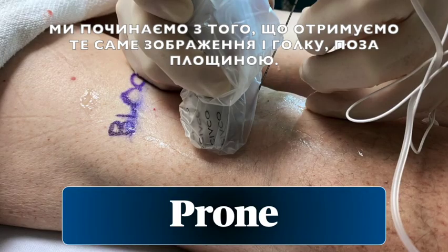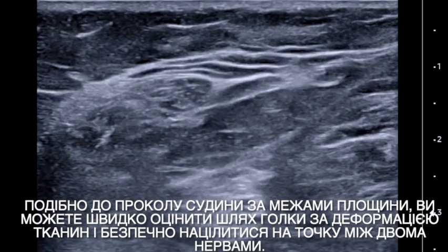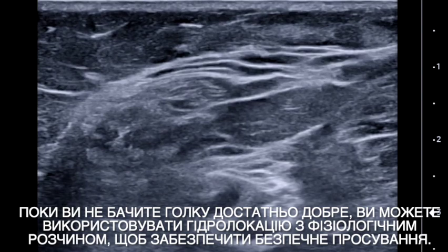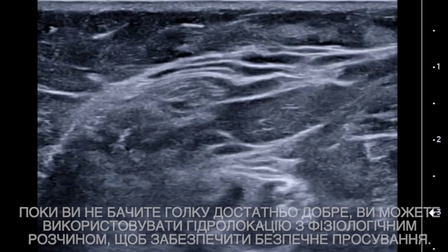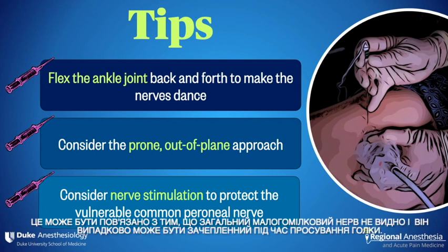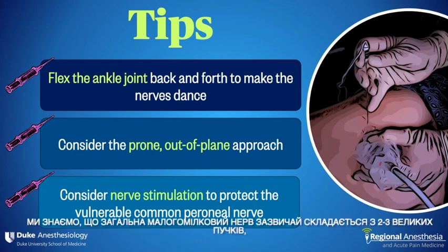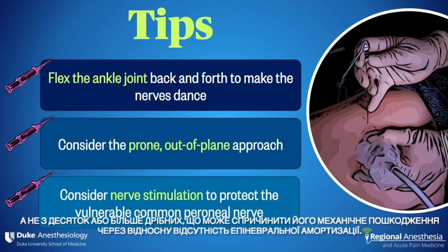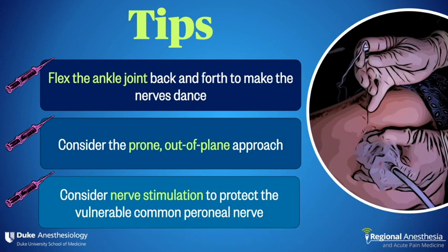We start by getting that same image and then a needle is brought out-of-plane. Just like an out-of-plane vascular puncture, you can quickly estimate the needle path by tissue deformation and safely aim for the point between the two nerves. While you won't see your needle all that well, you can use hydrolocation with saline to help stay safe as you advance. Lastly, the lateral popliteal sciatic block is one of the higher-risk peripheral blocks from the perspective of nerve injury — this may be because the common peroneal nerve is not seen and accidentally contacted as the needle is advanced. The common peroneal nerve typically comprises only two to three large fascicles rather than a dozen or more smaller ones, which may predispose it to mechanical injury due to the relative lack of epineural cushioning. Nerve stimulation is a useful adjunct that may give early warning of inadvertent needle-nerve contact.